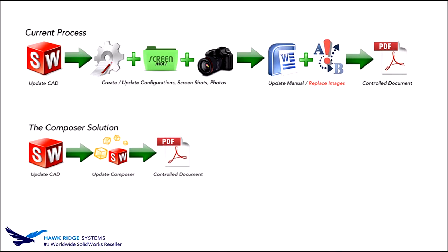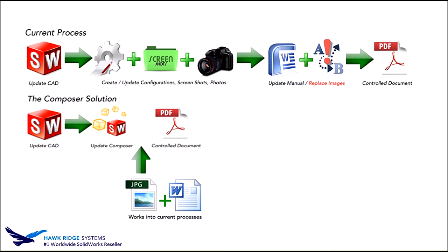Once we implement Composer, we typically see about an 80% time savings in both creation and update of documentation. We take the 3D models from SOLIDWORKS, bring them into Composer, set Composer up for the final print document or interactive document — step-by-step procedures, operation manuals, assembly manuals — and simply push out a PDF from there. This keeps everything associated back to the SOLIDWORKS files because Composer is always looking back at those files.